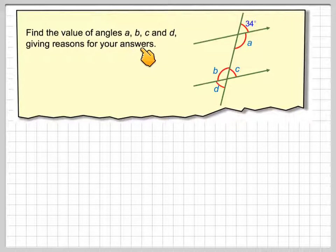Find the value of angles A, B, C, and D, giving reasons for your answers. We've got this angle here is 34 degrees, this angle here is A, this angle here is B, this angle here is C, and this one is D.